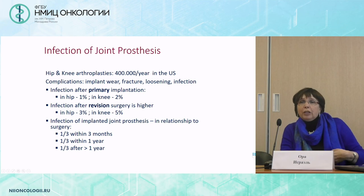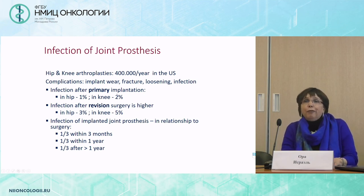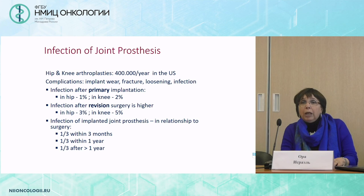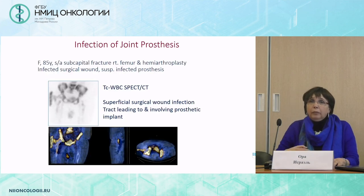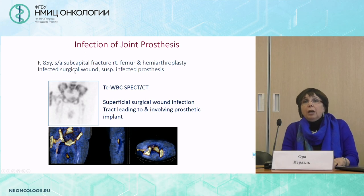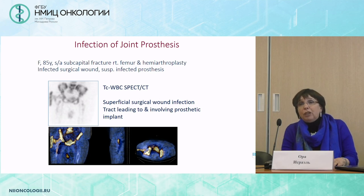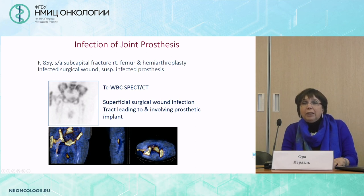Moving to infection of joint prosthesis — this orthopedic procedure is widely used worldwide and infection can occur in up to 2% of patients after primary implantation, rising to up to 5% after revision surgery, with infection occurring at different times early or later after the surgical procedure. This is one of our patients who had a subcapital fracture of the right femur and underwent hemiarthroplasty. She had an infected surgical wound, and by SPECT-CT we could define the superficial wound, the infected tract, and confirm that the infectious process was also involving the prosthesis.